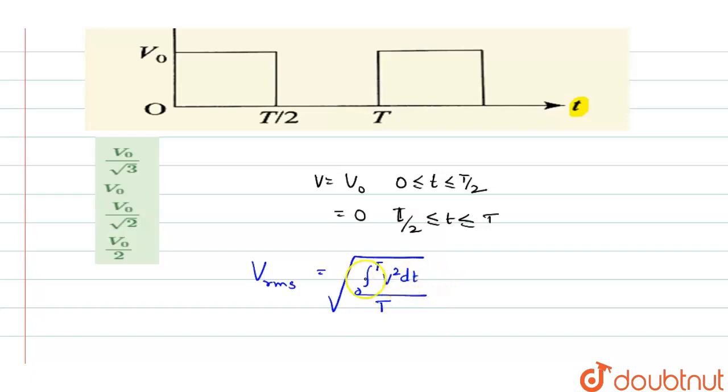Now we will split this because 0 to T has two different values. We write this as ∫₀^(T/2) V₀²dt plus the next time interval T/2 to T, which is ∫_(T/2)^T 0·dt, all divided by T.